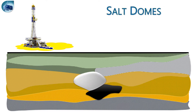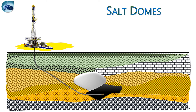Salt domes. Salt domes can be avoided through directional drilling. Salt domes are natural traps for hydrocarbons; however, drilling through salt domes can lead to major consequences such as hole washout and lost circulation.